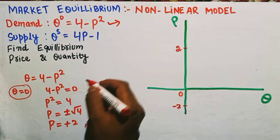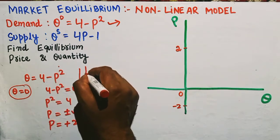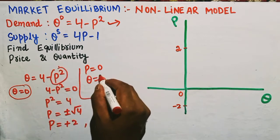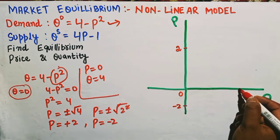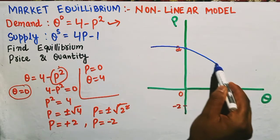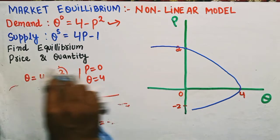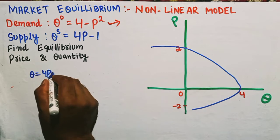Now when P = 0, the P² term becomes 0, so Q = 4. When price is 0, quantity is 4. Since we have a quadratic-type function, the demand curve looks like a parabola touching the horizontal axis at Q = 4.